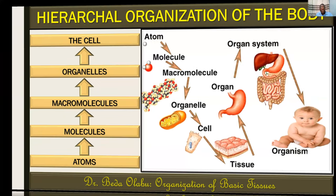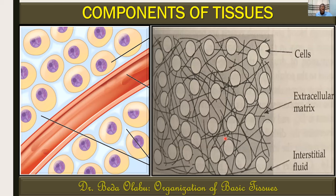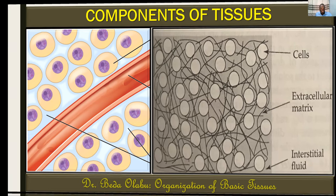Back to the tissues. When we talk of tissues, we're not just referring to cells only. It's a group of cells, but tissues also include the biological material between the cells. We call that biological material between the cells the extracellular matrix — it may also be called the intercellular matrix. This matrix also contains some water. The water within tissues is what we call the interstitial fluid, and its amount will vary depending on the tissue.